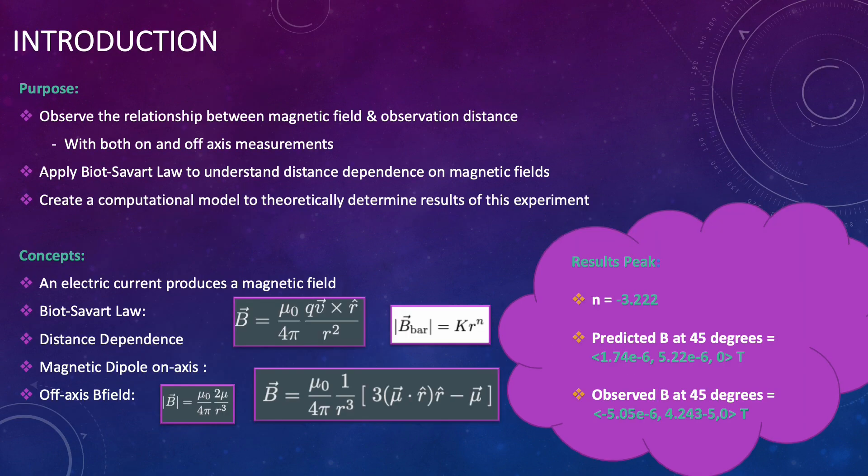The purposes of this lab include observing the relationship between magnetic field and observation distance both on and off axis using a small bar magnet, applying the Biot-Savart law to understand distance dependence for magnetic fields, and developing a model to determine theoretical results in comparison to experimental ones.